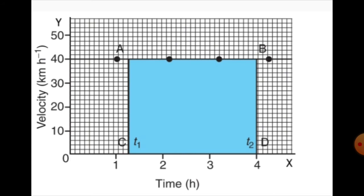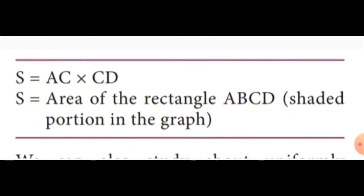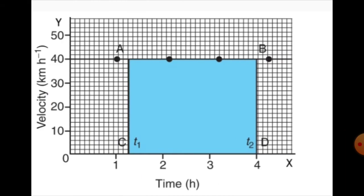The displacement S covered by the car in a time interval T can be represented as S equal to AC into BC. The area measured is that of a rectangle ABCD — the shaded portion of the graph. The area of the rectangle is length multiplied by breadth, that is AC into BC.